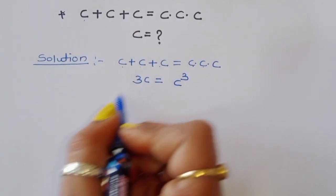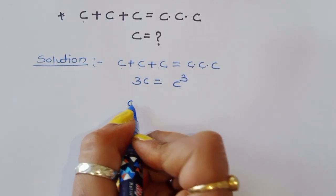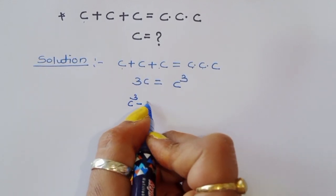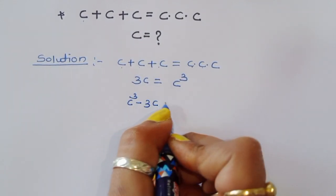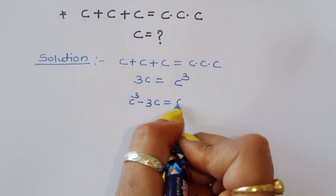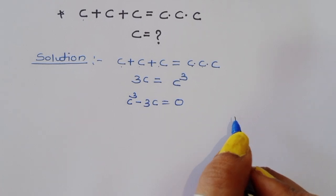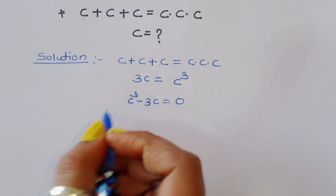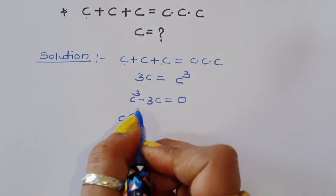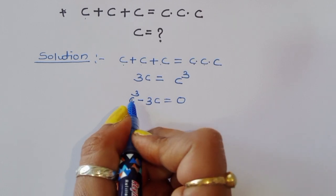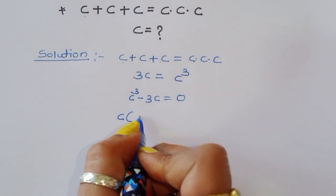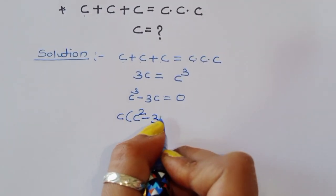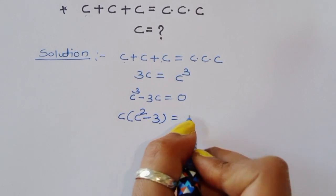We can write c cubed minus 3c is equal to 0. Now, taking common c. When we take out c as common, the remaining term is c squared minus 3, so we have c times (c squared minus 3) is equal to 0.